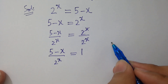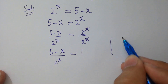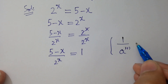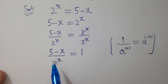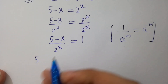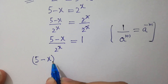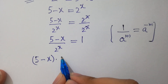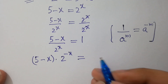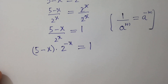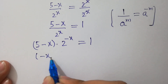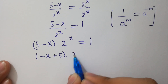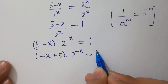Since we know that 1 over a to the power m equals a to the power minus m, 5 minus x over 2 to the power x becomes 5 minus x times 2 to the power minus x, equal to 1. This can also be written as minus x plus 5 times 2 to the power minus x equals 1.